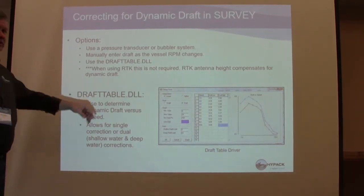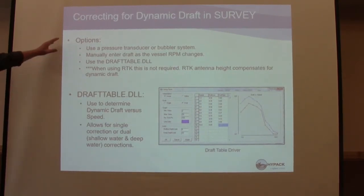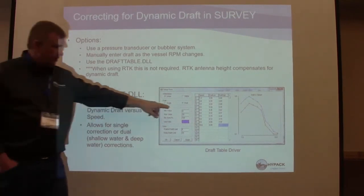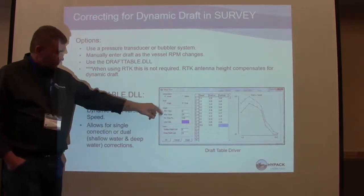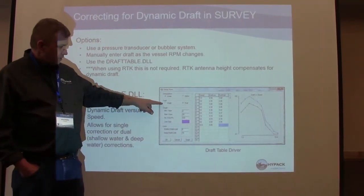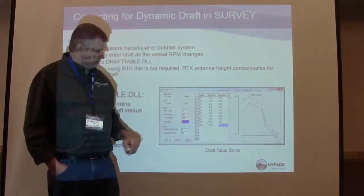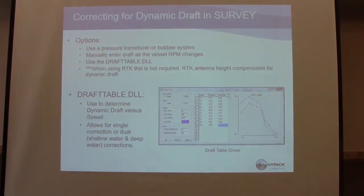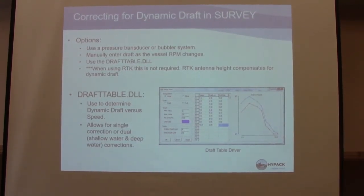Here's your draft table DLL — you enter speed, draft low, and draft high for that speed. This one is set up as a dual draft; you can also have a single draft. It graphs the range of draft for you. As the boat moves through the water, it enters a DFT record — going back to that raw file — every time it updates your draft based on your speed. When you're using RTK, this is not required — your RTK antenna height compensates as you go up and down in the water column.